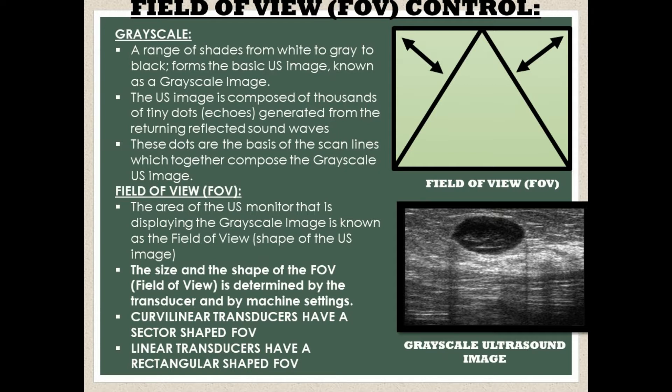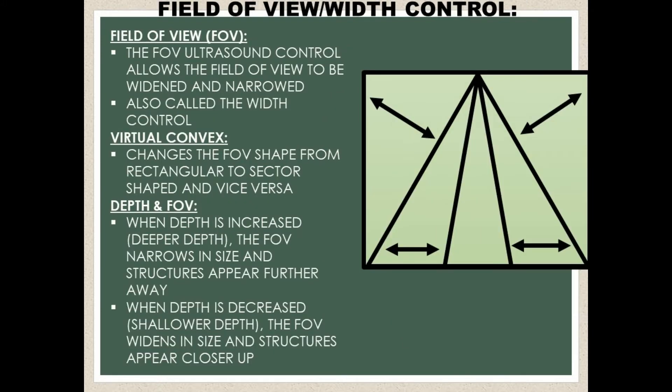Curvilinear transducers have a sector-shaped field of view, and linear transducers have a rectangular-shaped field of view. The field of view ultrasound control allows the FOV size to be widened and narrowed on the ultrasound image, and it's also known as the width control. There's also an ultrasound control called virtual convex, which changes the field of view shape from rectangular to sector shape, and vice versa.